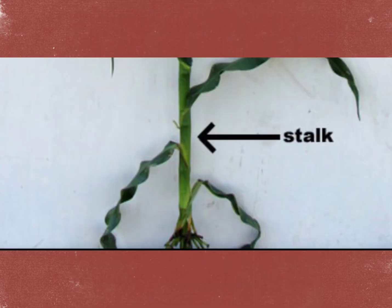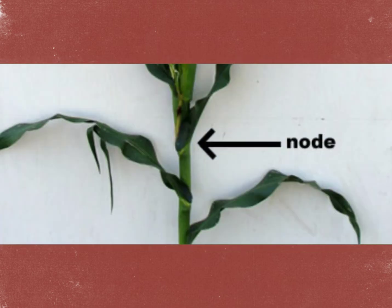The stalk is the main body or stem of the corn plant. Stalks have to be sturdy to support the weight of the corn ears and provide pathways for the nutrients to move up and down the plant.